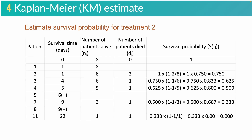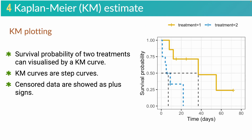Similar to treatment 1, you can calculate survival probability at the time points where the event occurred for treatment 2, and these are the results of the calculation for treatment 2. After the survival probabilities of both treatments were calculated, they can be visualized using the KM curve. The KM curve can be drawn using statistical software such as R, Python, or SPSS. These graphs are step curves, and you can also see the censored data as plus signs. Probabilities at censored time points are similar to the probabilities of the previous events.